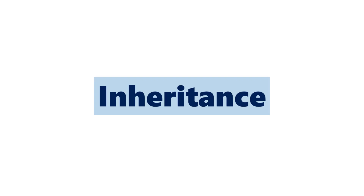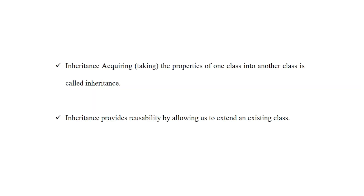Hey everyone, today we are going to learn about single inheritance and the program of single inheritance in C#.NET. But before going to single inheritance, let's see what is meant by inheritance. Inheritance is acquiring or taking the properties of one class into another class, and that is called inheritance. Inheritance provides reusability by allowing us to extend an existing class.